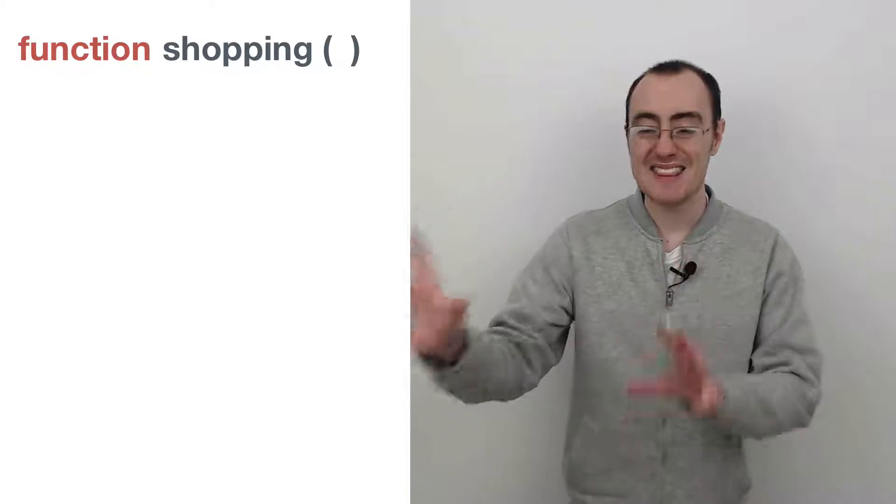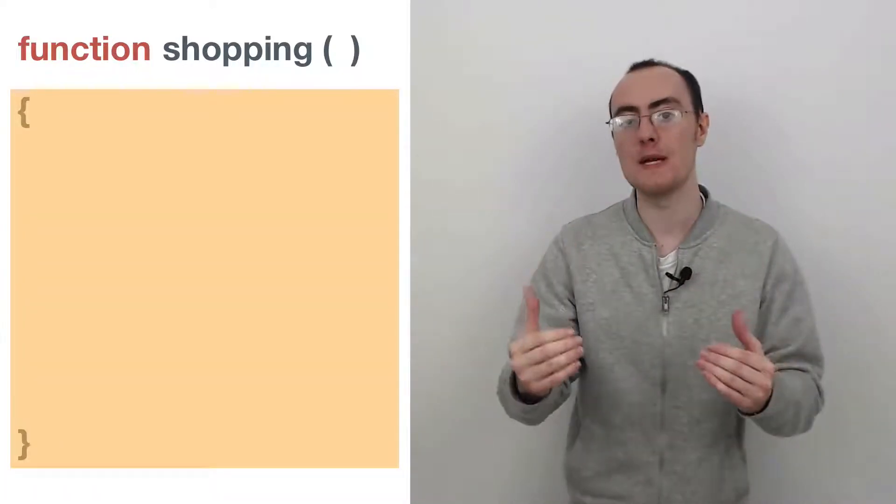Well, typically in most programming languages they use the function keyword and then they want the name of the function, the verb. And it's best to make it a verb, such as shopping is a verb. Then we have the parentheses, which we'll come back to in just a second. And then we have the braces.